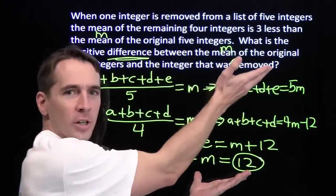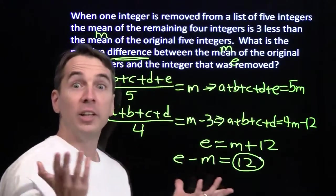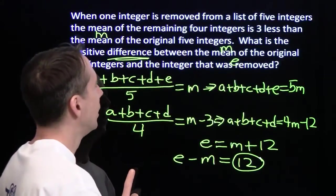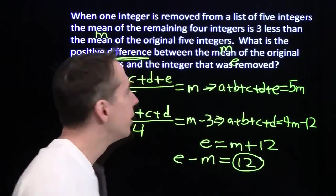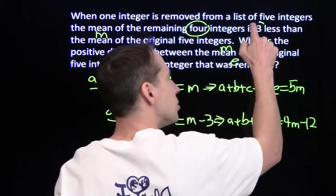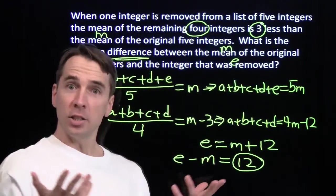I found the answer without finding any of these variables. I found the answer without finding all these other answers. That's pretty awesome. But I know what you're thinking. You're looking at that 12, and you're saying, 4 times 3 is 12.